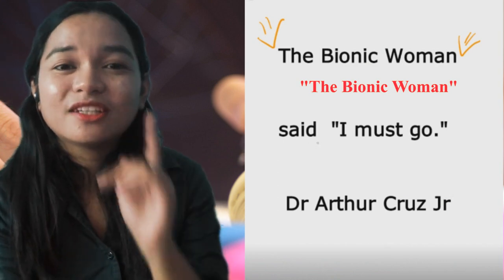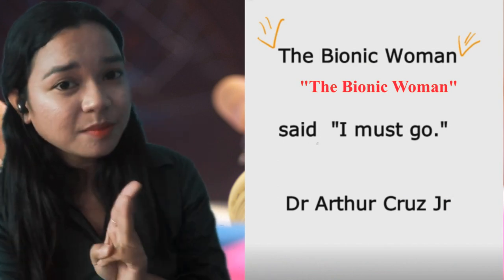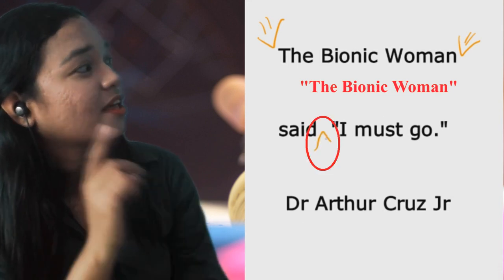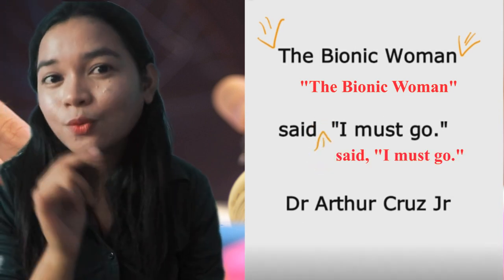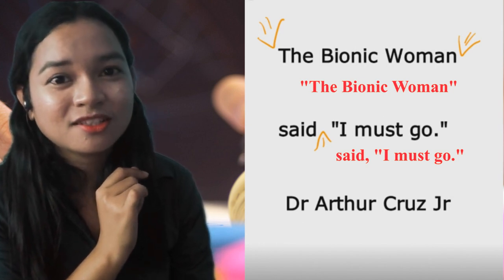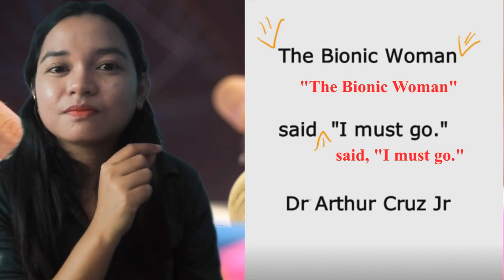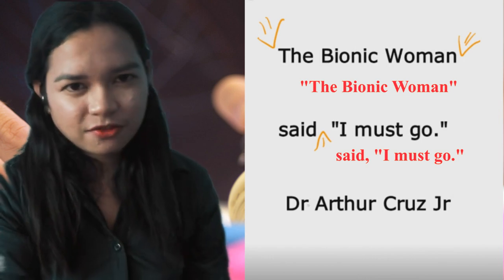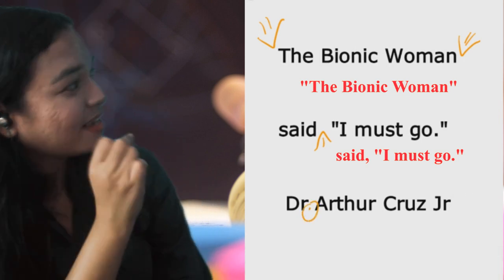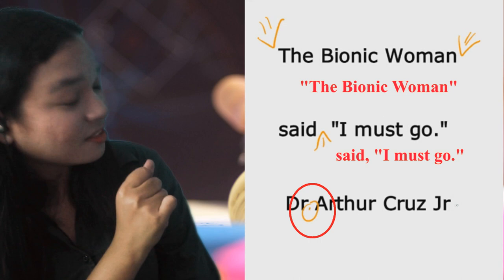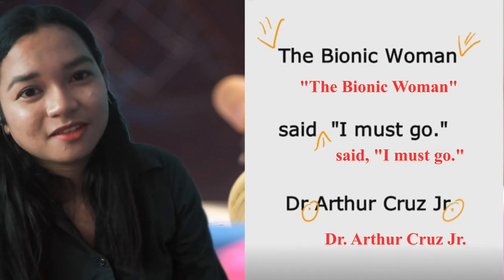And then, if you want to insert a comma, colon, and semicolon, we use this symbol and put it right below where you wanted the symbol to be inserted. Now, the period is a little bit different. The period will be placed inside a circle and place it directly where you wanted it to be.